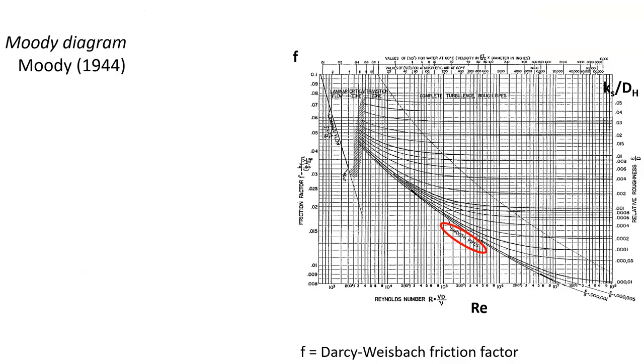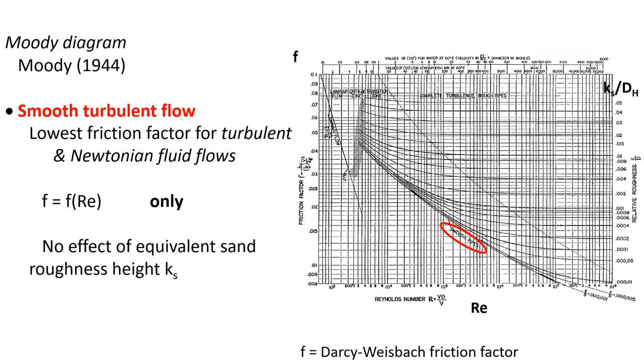If we refer to the historical Moody diagram, smooth turbulent flow would be characterized by the lowest friction factor for turbulent Newtonian fluid flow, with the Darcy-Weisbach friction factor f being a function of the Reynolds number only, with no effect of the equivalent sand roughness height K_s.